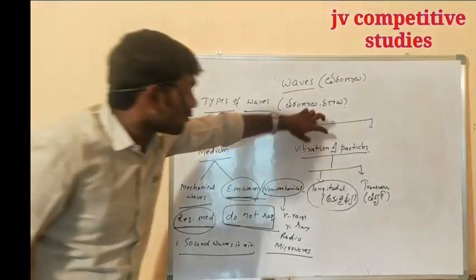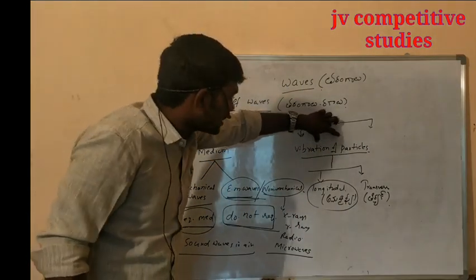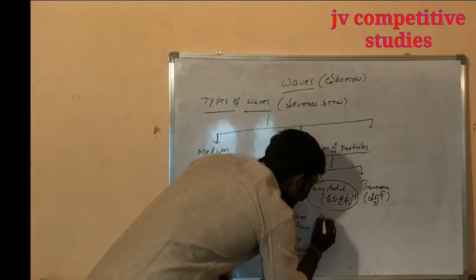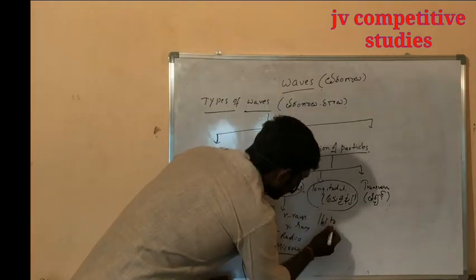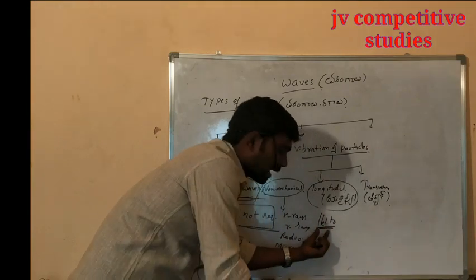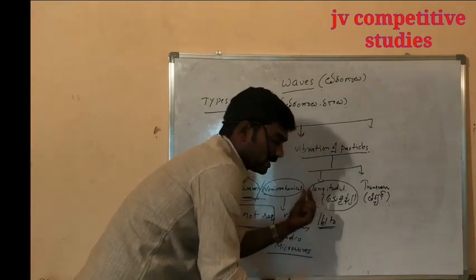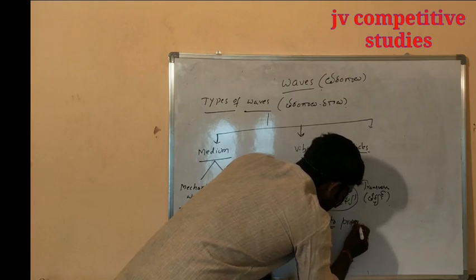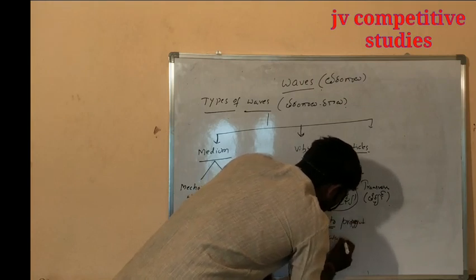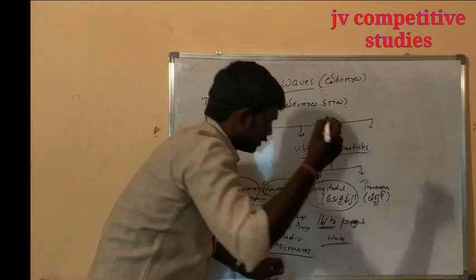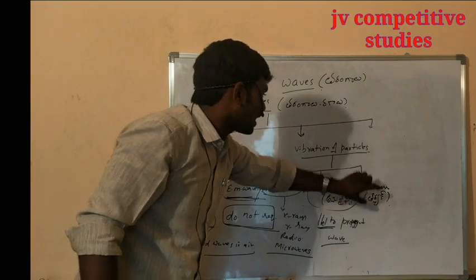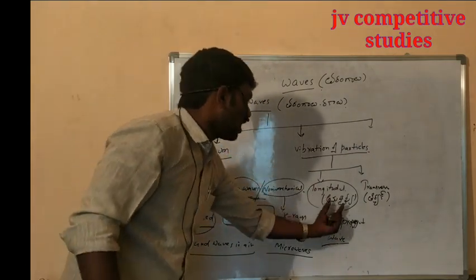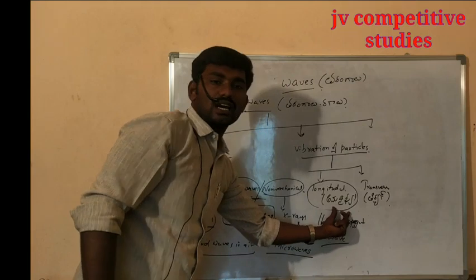Longitudinal waves: the vibration of particles which are parallel to the propagation of a wave. In the direction of the wave, if the particles vibrate in the same direction, those are called Anudhairya tharangalu — longitudinal waves.